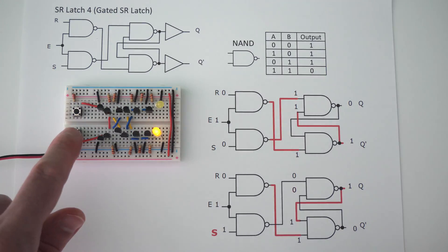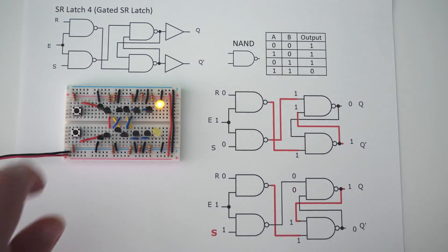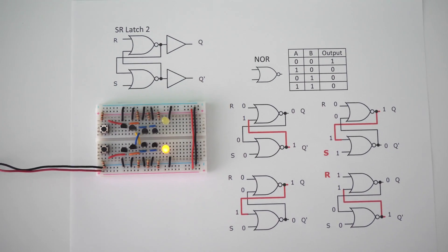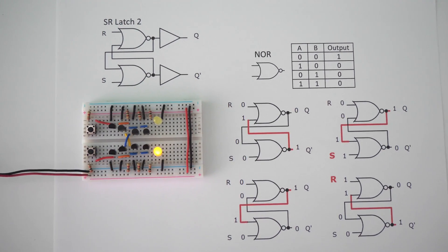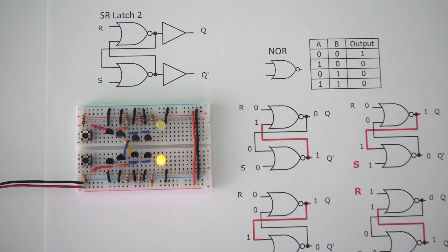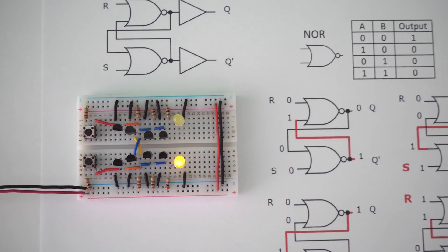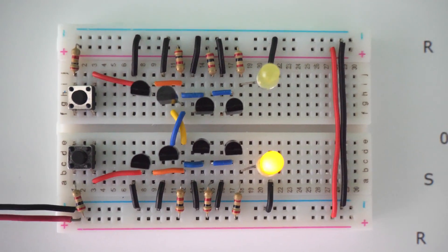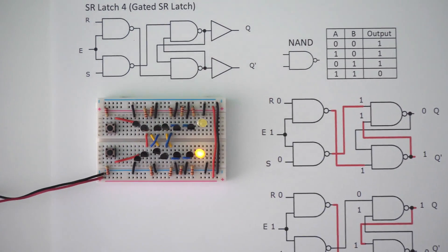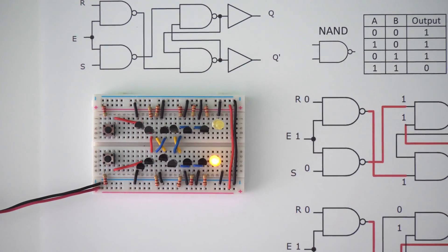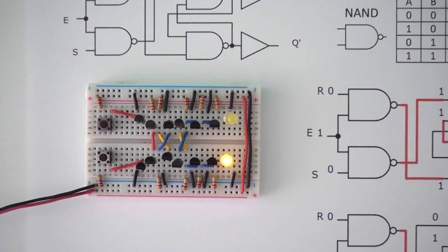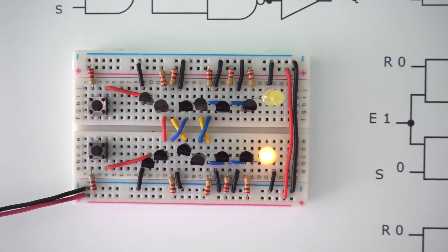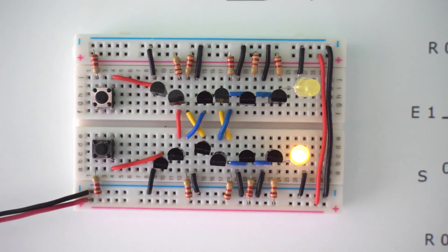These are really important circuits to understand how to build. As you probably know, we're working towards creating a 4-bit computer using individual transistors, and then we're going to be building artificial neurons as we work our way towards creating non-biological human consciousness. Let's get to it.